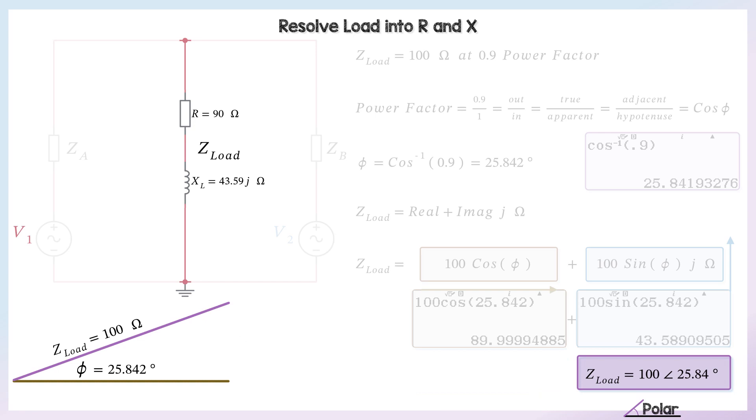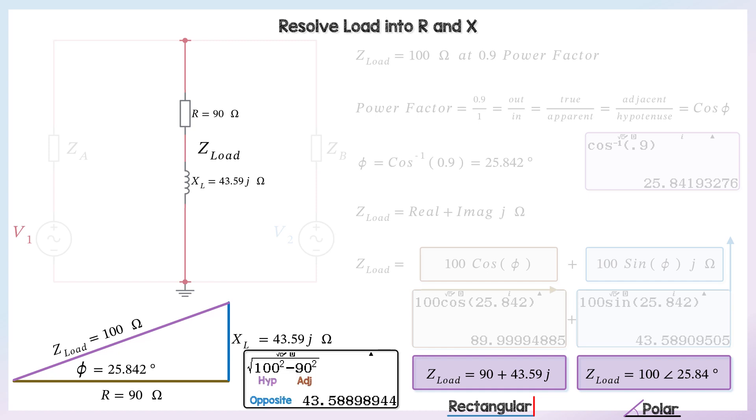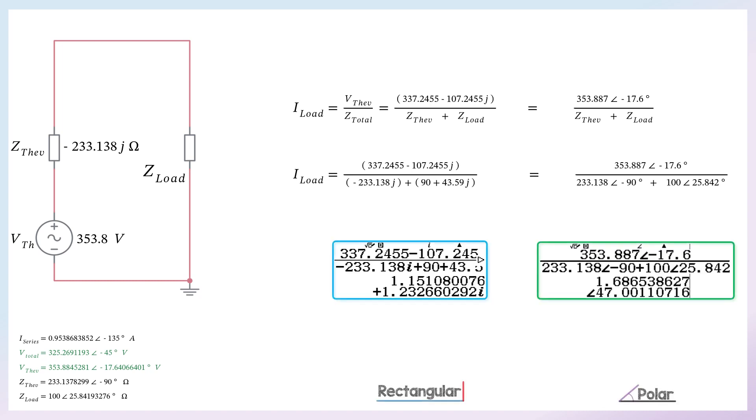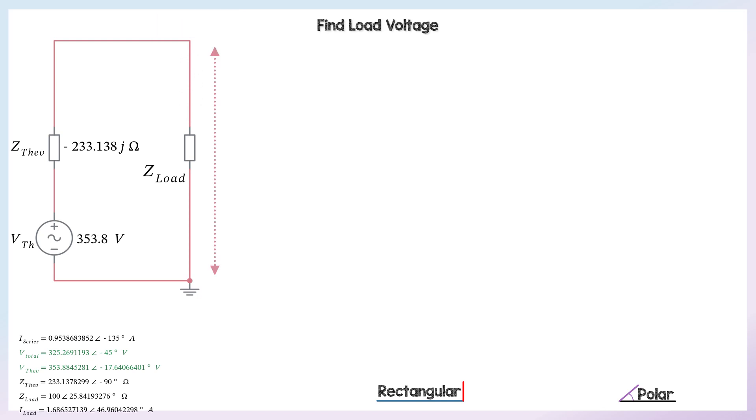Now we can stick that into the equation and find the current through the load and the voltage across it. So the current through the load is the Thevenin voltage divided by the total impedance. Now we know what Z-load is. It's whacking it into a calculator. And we can find out that the load in polar form, the current is 1.6865 amps at 47 degrees leading compared to the Thevenin voltage.